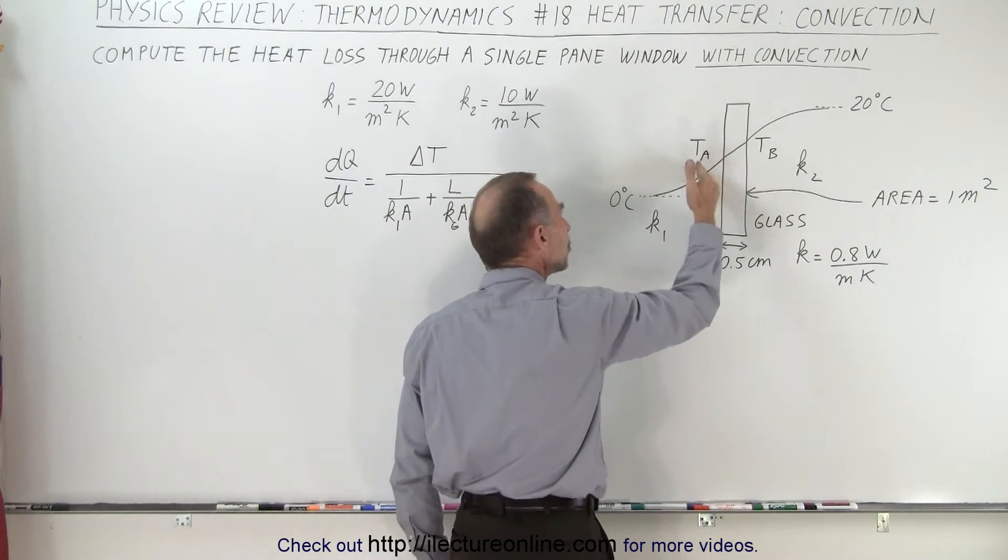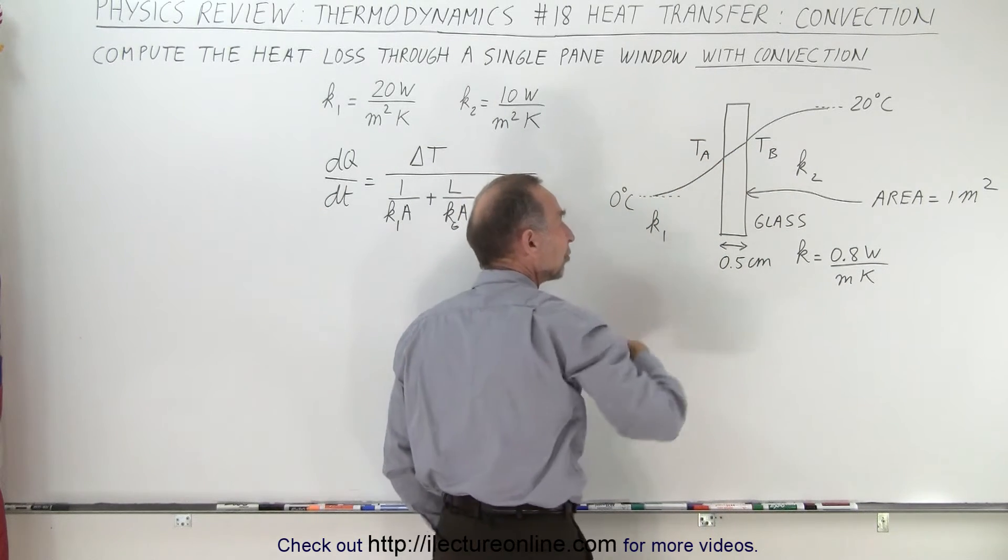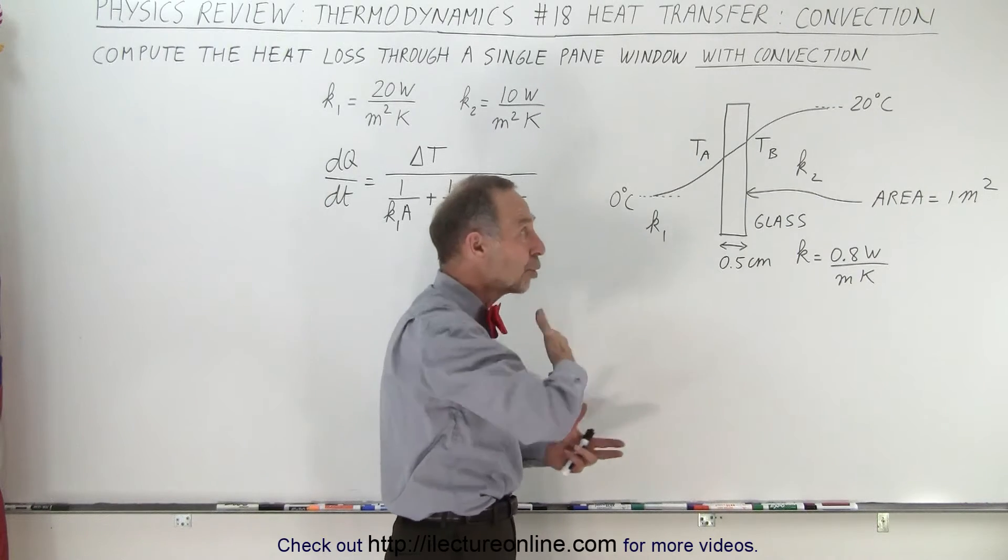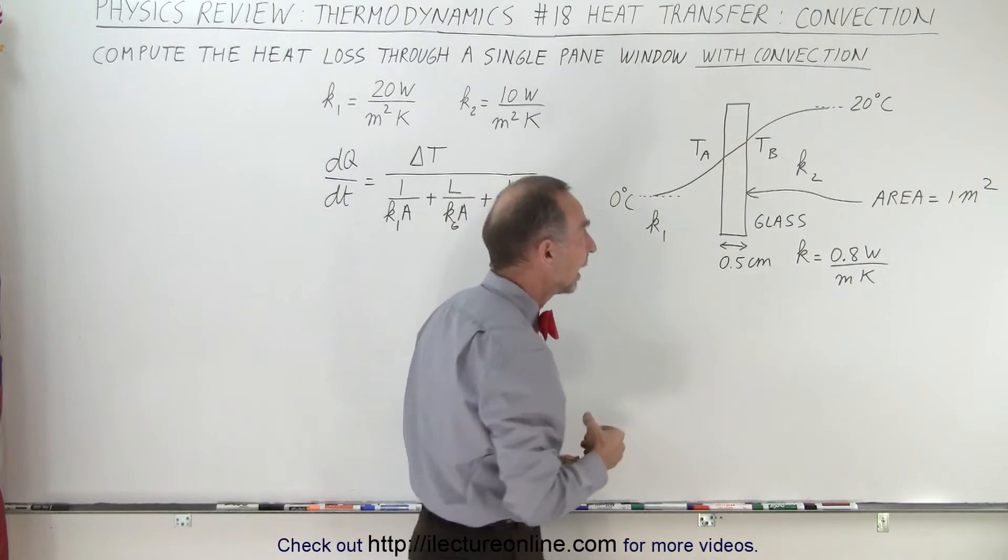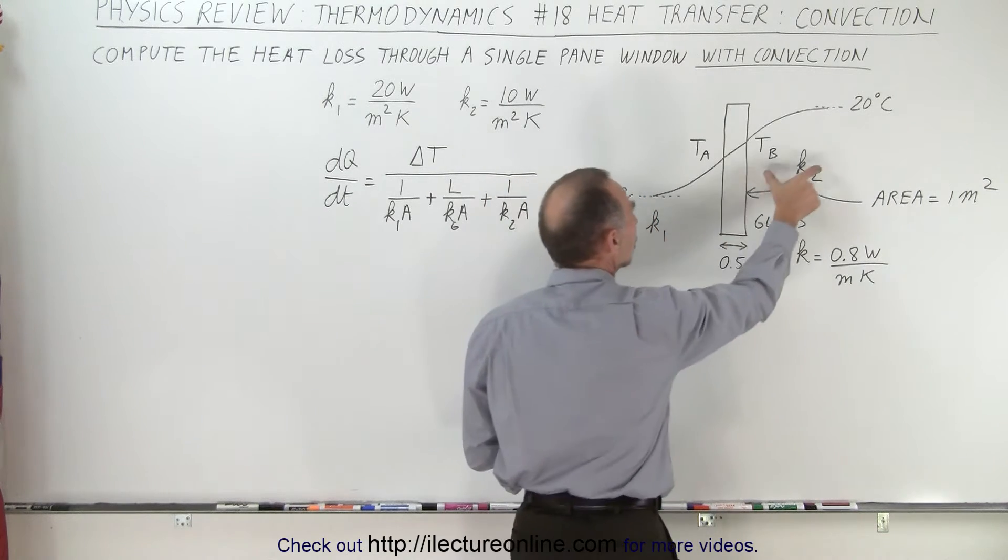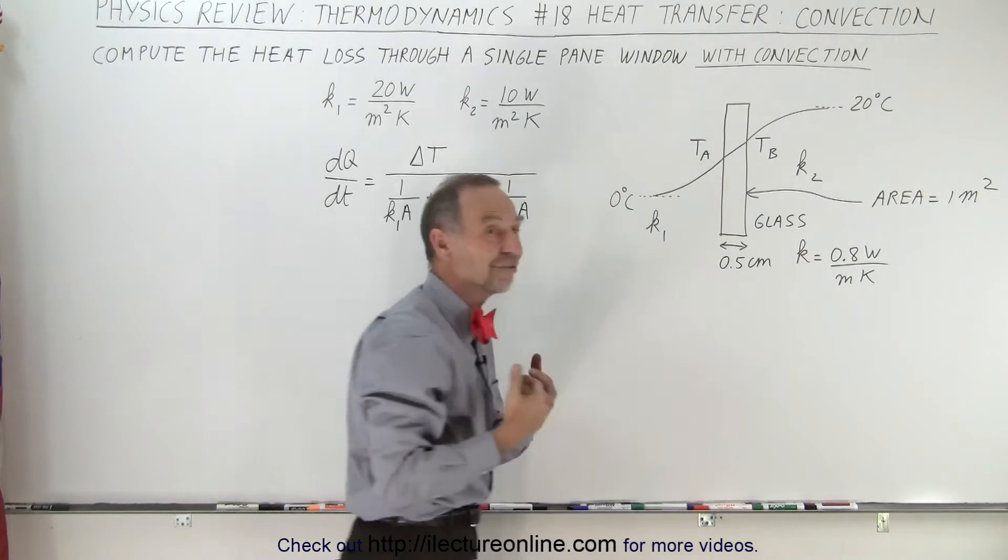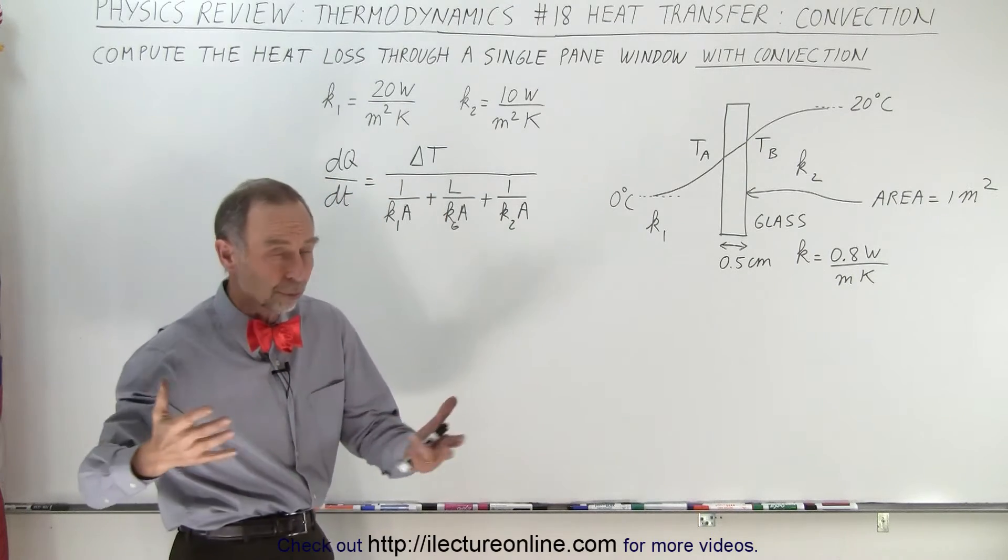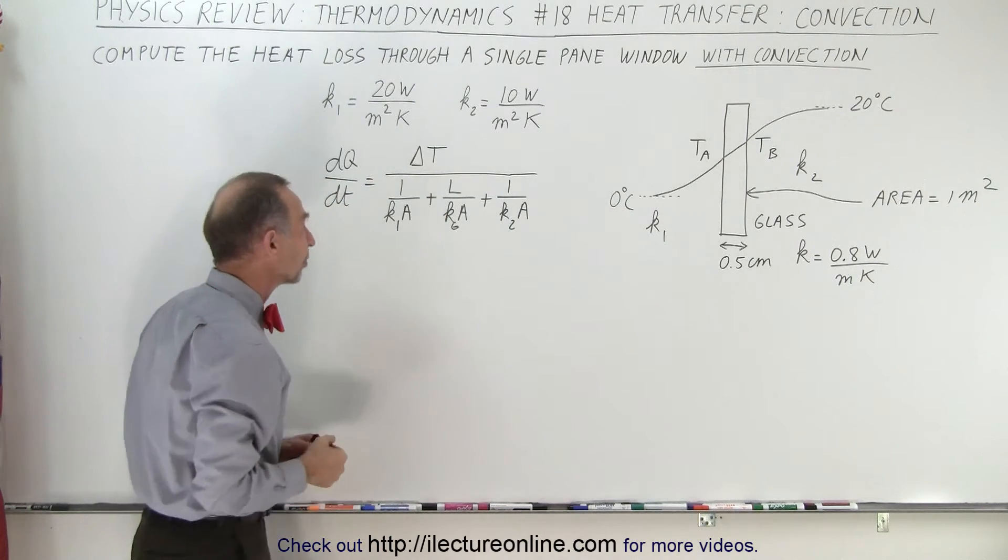Heat has to be removed from that surface and that is dependent upon how much wind and motion there is of the air outside and the same on the inside. To express that, we have convection constants that need to be determined depending upon the circumstances.